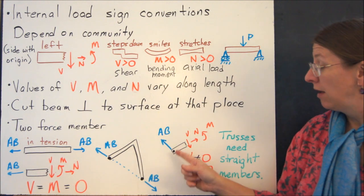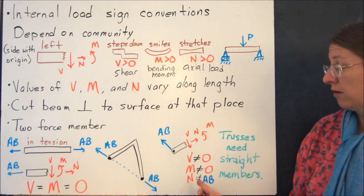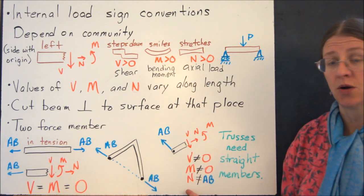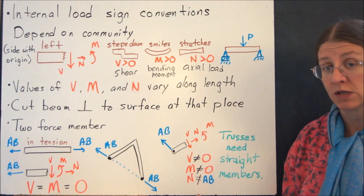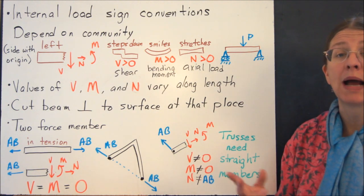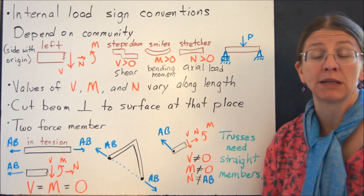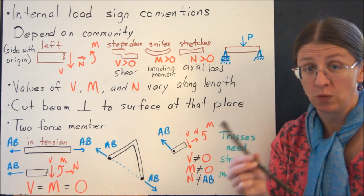That only works if your two-force member is straight. If your two-force member is not straight, then as you can sort of see right here, V and M are not going to be zero, and N is not going to be equal to that force AB. So when we go back to trusses, you'll notice that our trusses are built out of straight members, not crooked ones.